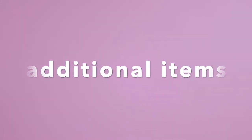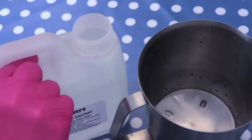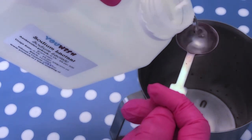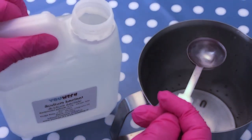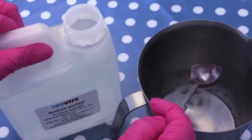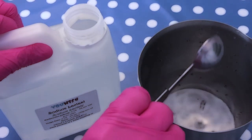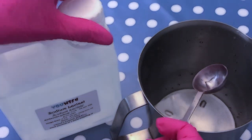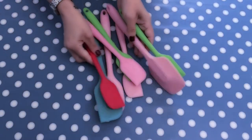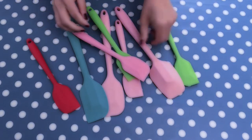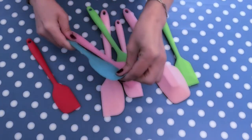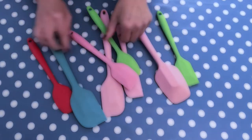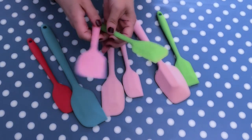The following items are nice to have once you have everything listed so far. Sodium lactate hardens cold process soap so you can unmold it and enjoy it more quickly, so it is of great help. You can just add some to your lye solution before mixing it with your oils. Silicone spatulas are great for mixing and scraping out your soap. I like the ones that are in one piece so you don't risk losing a part when making soap. They are very affordable and you can find them at the supermarket.